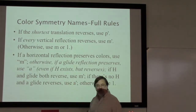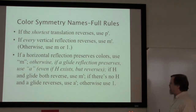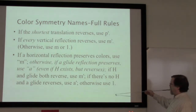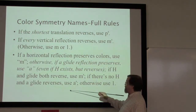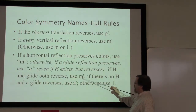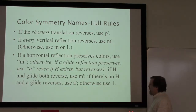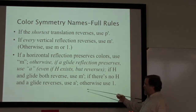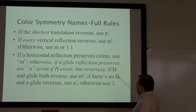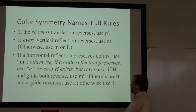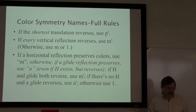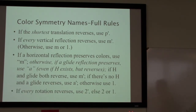The rest is as before: if there's a horizontal and a glide reflection and both of them reverse, we use m prime — giving preference to m prime, not a prime. If there's no horizontal reflection at all but there is a glide reflection that reverses, we use a prime. If there aren't any of those things, we use a one. And the final rule about the two or two prime is the same as before.